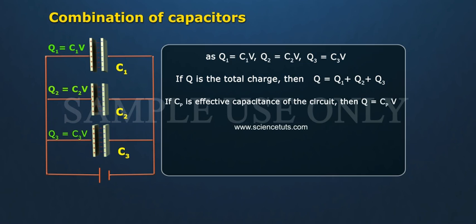If Cp is effective capacitance of the circuit, then Q equals Cp V.